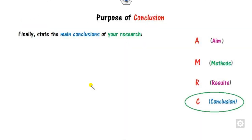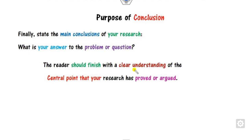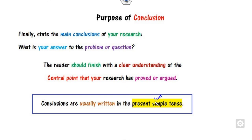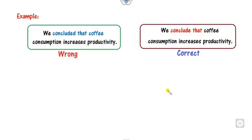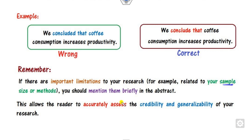Finally, you have to write the Conclusion of your research in the abstract — what is your answer to the problem or question? In our example, the question is the correlation between coffee and productivity, so write the conclusion with respect to that. The reader should finish with a clear understanding of the central point your research has proved or argued. What you stated in the first line of the abstract must match the conclusion. Conclusions are usually written in the present simple tense — for example, 'we conclude that' rather than 'we concluded that.' If there are limitations in your method, mention them briefly, such as sample size, as this allows the reader to accurately assess the credibility and generalizability of your research.